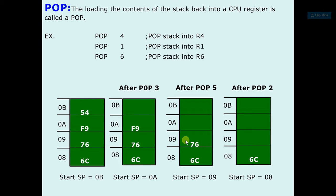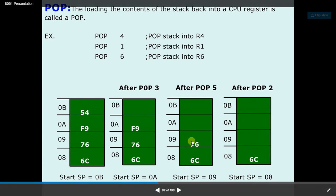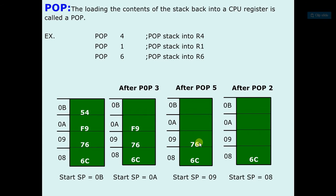So now POP 6 means copies the data to R6. So it will copy the 76 data to R6. Then the address is decremented and now the address is 08.